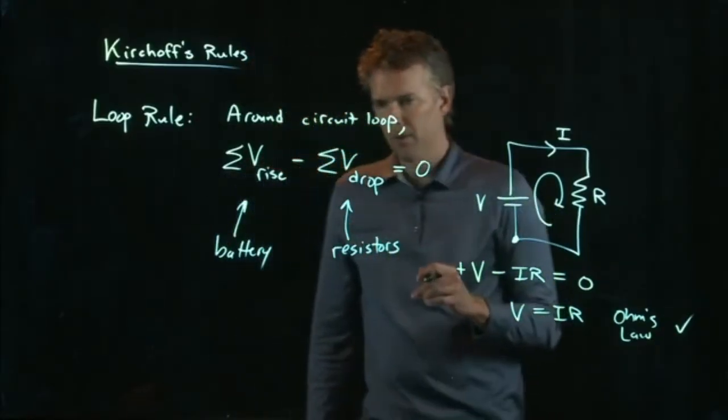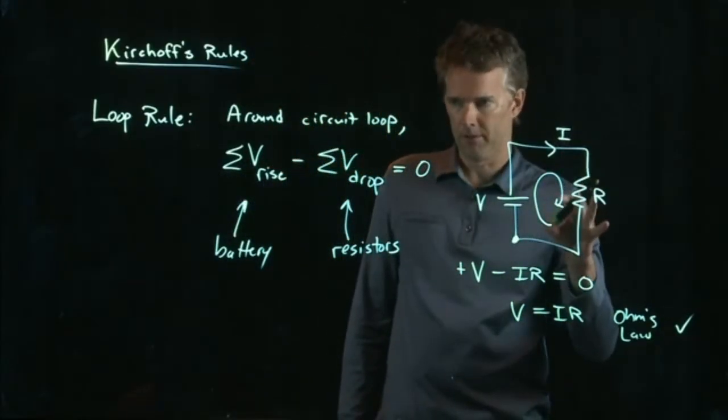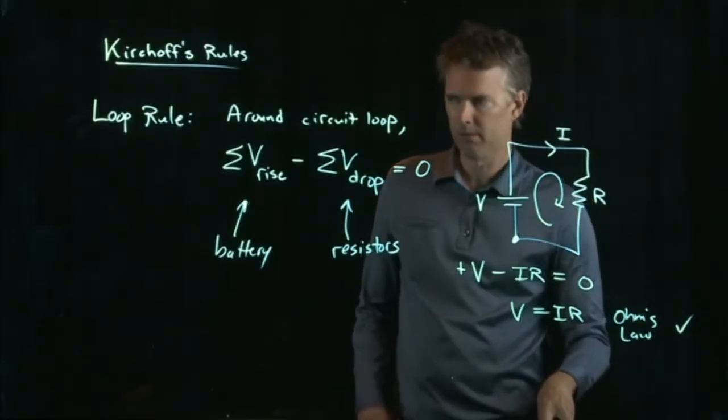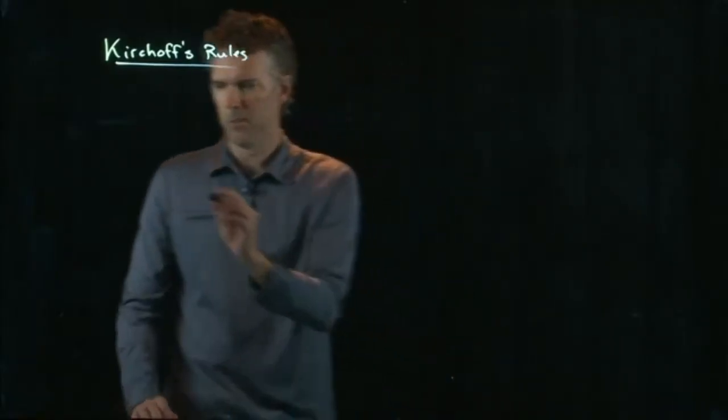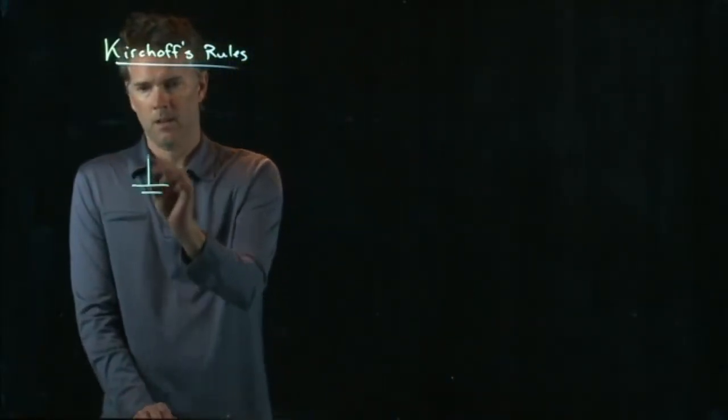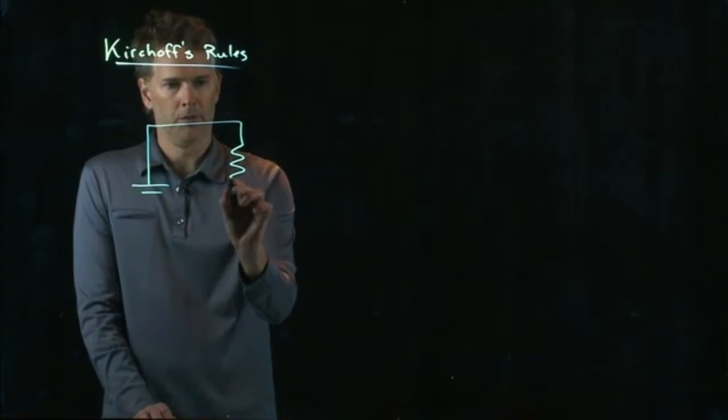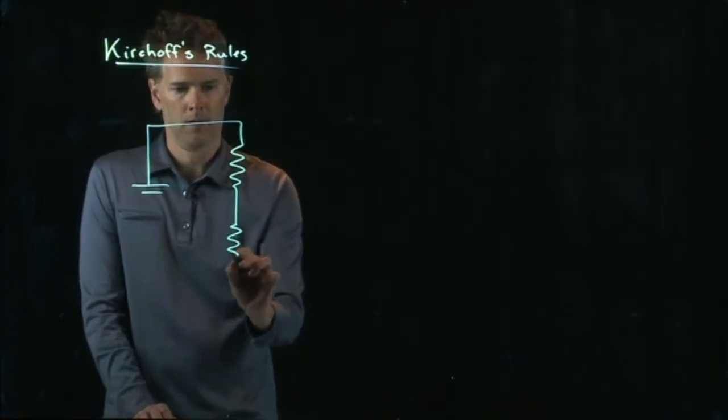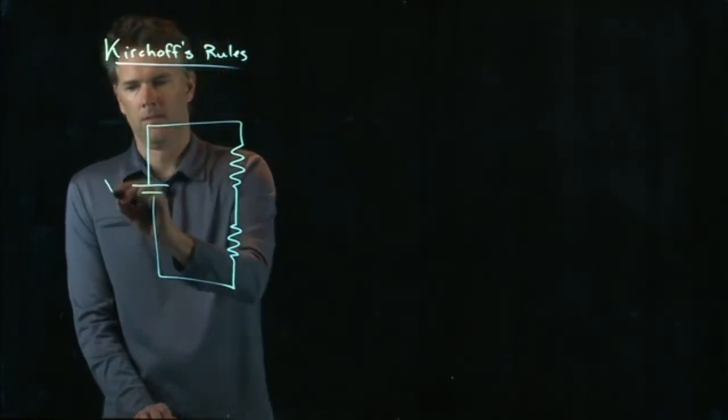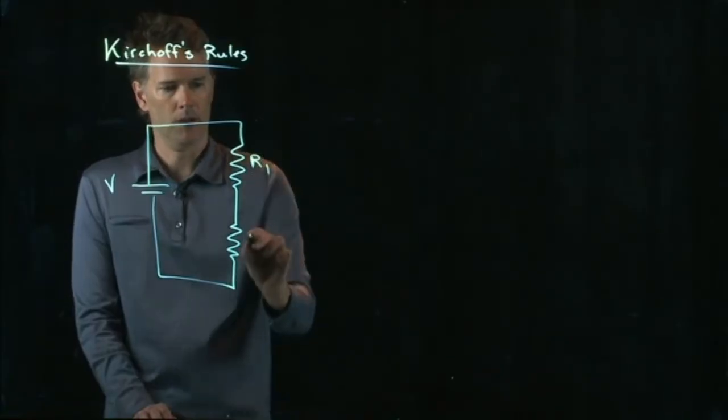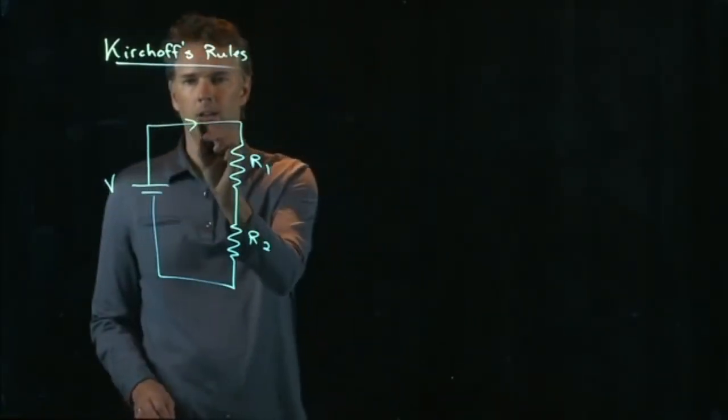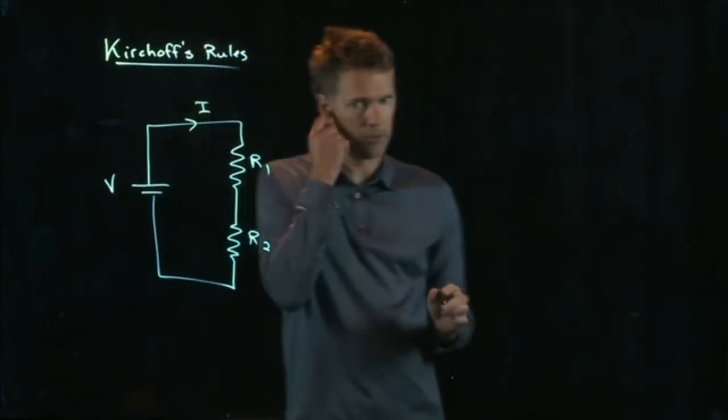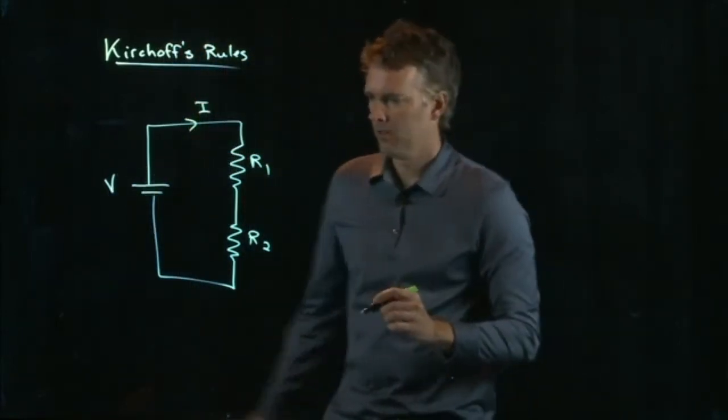But let's say that we have more than one resistor in there. Let's see how this loop rule works. So let's do a simple battery again, but we're going to add two resistors, R1 and R2. And there's some current I that's flowing in the circuit. So once again,